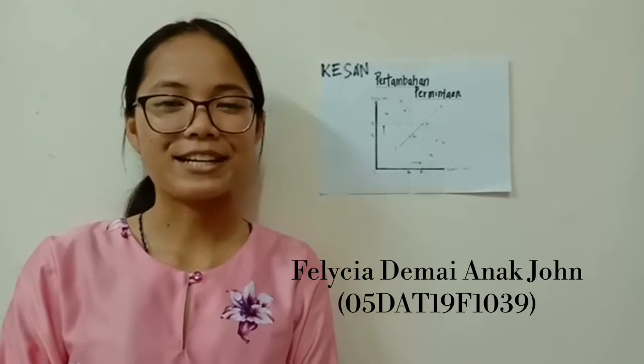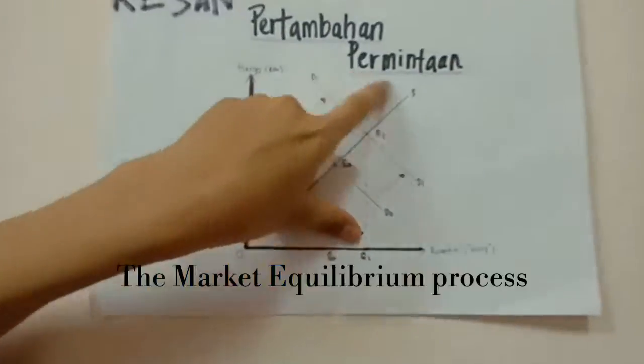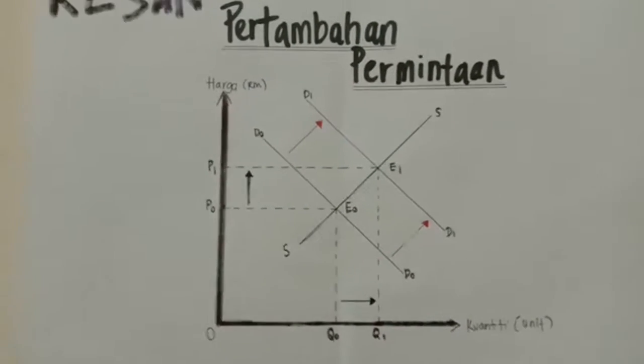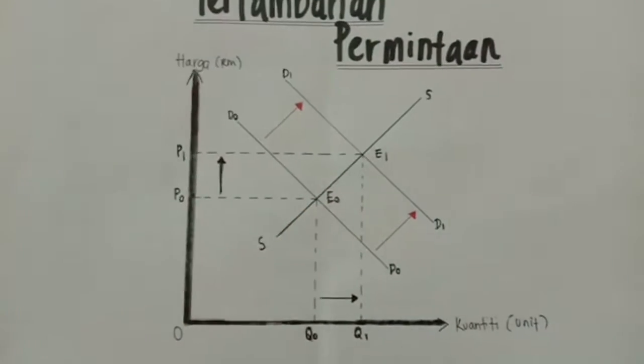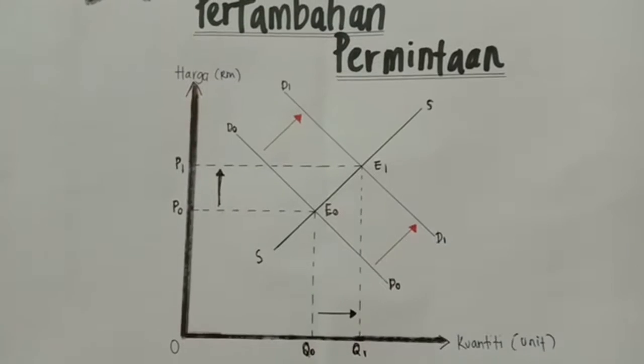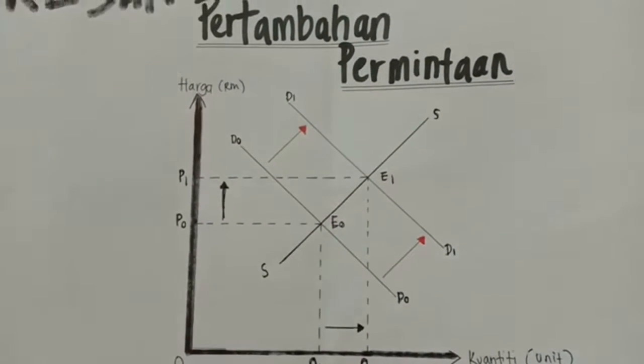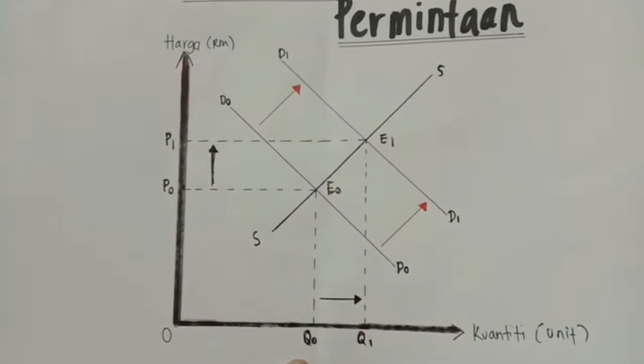Nama saya Felicia Demai, dan saya akan menerangkan tentang kesan pertambahan permintaan. Keseimbangan pasaran yang asal dicapai pada titik E0 dengan keluk permintaan D0 bersilang dengan keluk penawaran SS. Harga dan kuantiti keseimbangan masing-masing ialah P0 dan Q0.